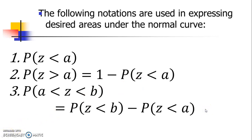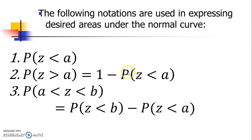There are three cases to consider when dealing with problems involving normal distribution. First is when Z is greater than or less than a given value A, the standard score. If we are dealing with greater than — that is, to the right of the value of Z — then we need to consider the formula: 1 minus the probability, which is the area to the left of Z.